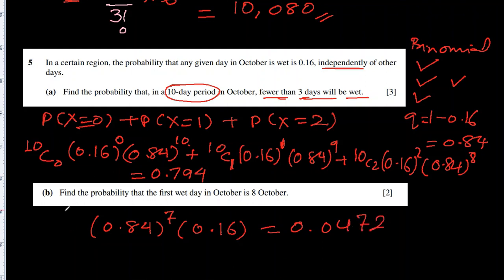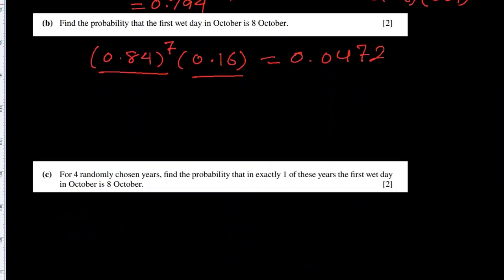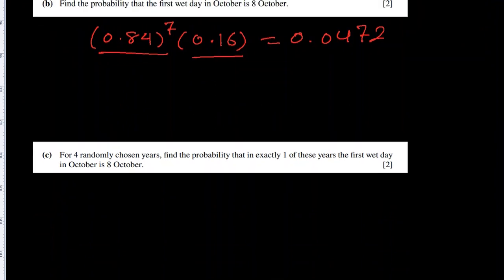Note: this is not binomial distribution. There is no possibility the success happens on an earlier day, which is why there is no nCr in front — it is straight away seven failures followed by the eighth success.